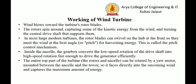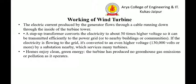The entire top part of the turbine can be rotated by a yaw motor mounted between the nacelle and the tower, so it faces directly into the oncoming wind and captures the maximum amount of energy. The electrical current produced by the generator flows through a cable running down inside the turbine tower. Then a step-up transformer converts the electricity to about 50 times higher voltage so it can be transmitted efficiently.